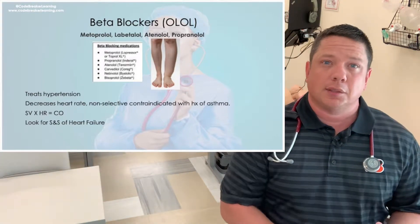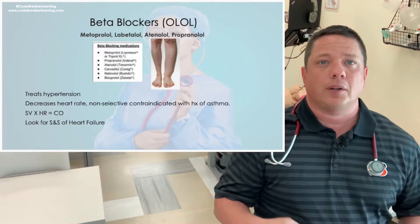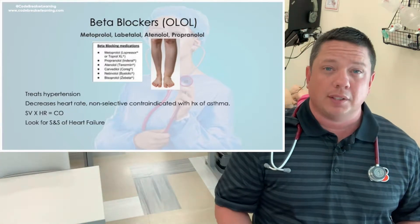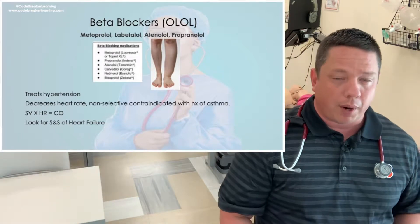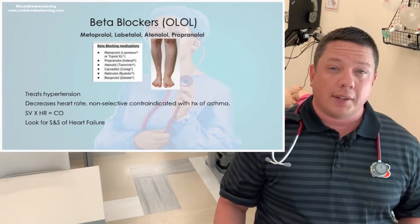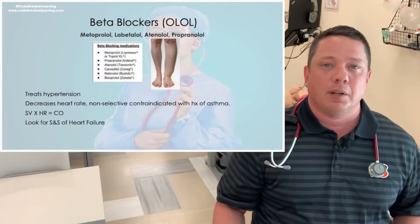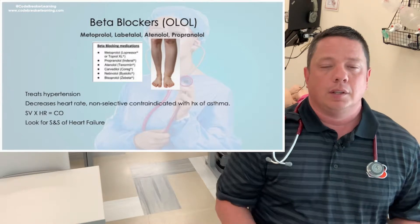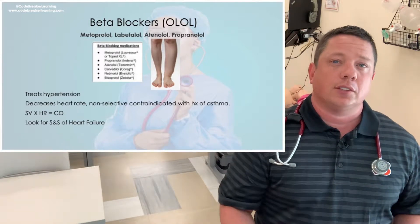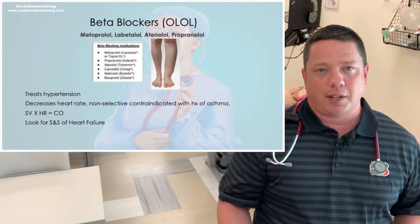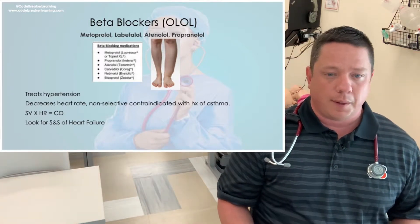Look for signs and symptoms of heart failure like difficulty breathing, shortness of breath, swelling of the ankles, and edema. Beta blockers are also contraindicated for anybody with a history of asthma.